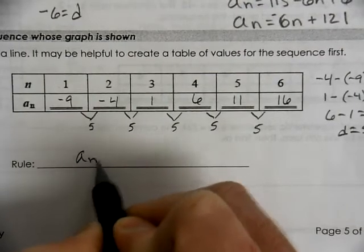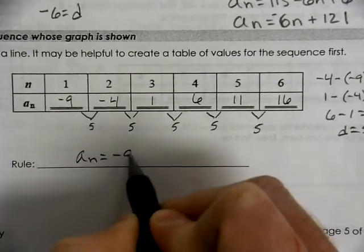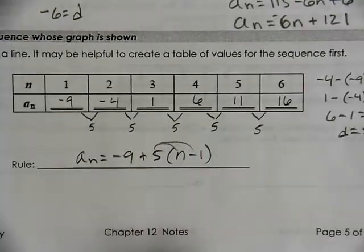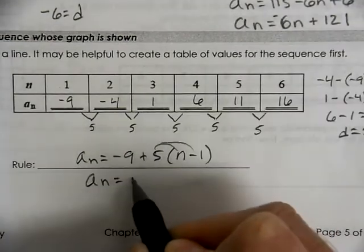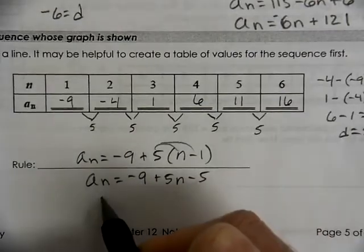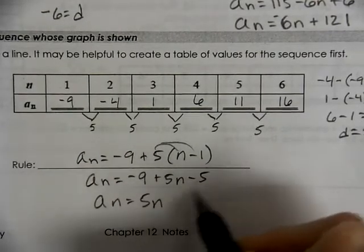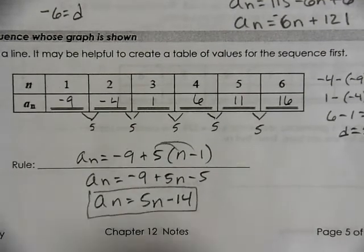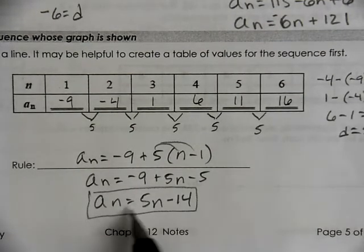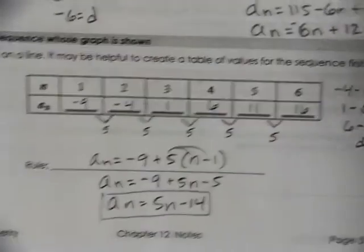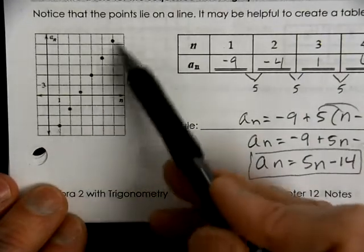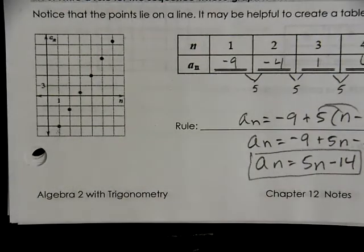So we notice that we have a of n. Our first term was negative 9. Our common difference is 5, n minus 1. If we distribute that through, we have a of n that equals 5n minus 14. That's representing very much like y equals mx plus b. It can relate directly to your graph. If you plot the points out in the sequence, it should represent a linear line because all the points have a continuous change, a constant change.